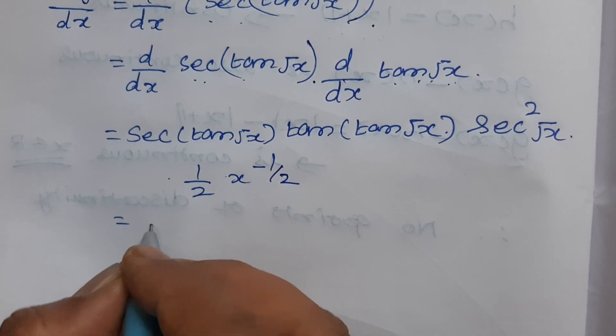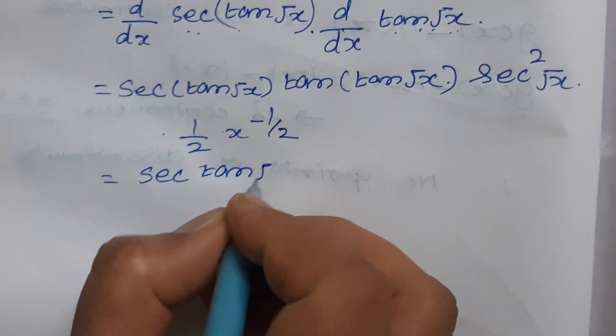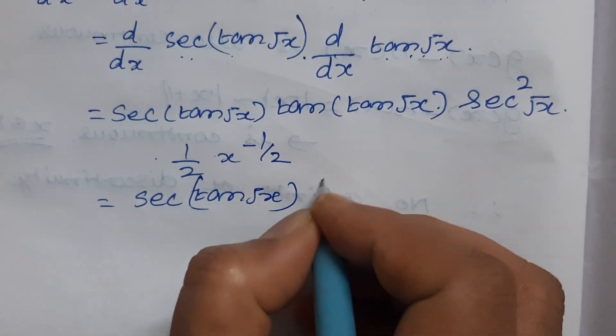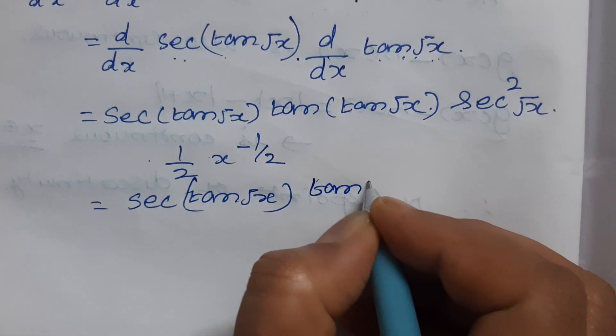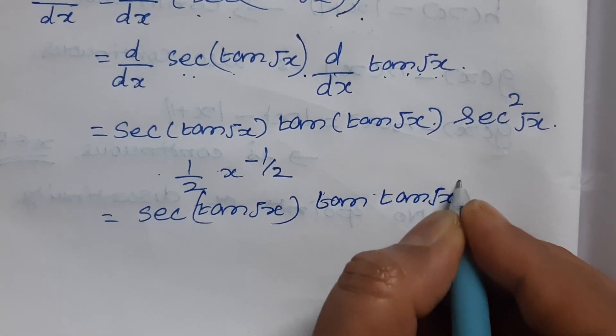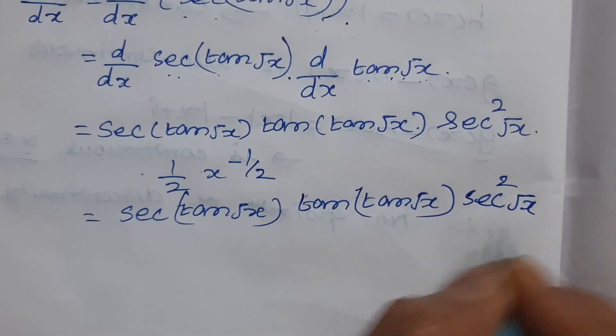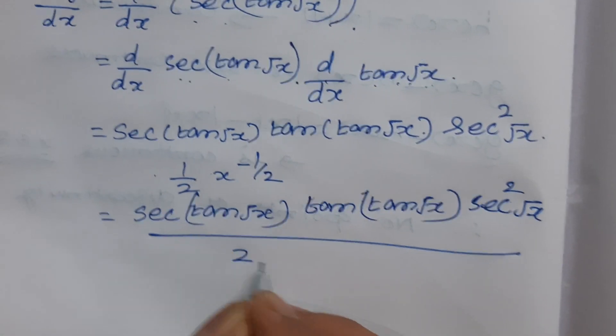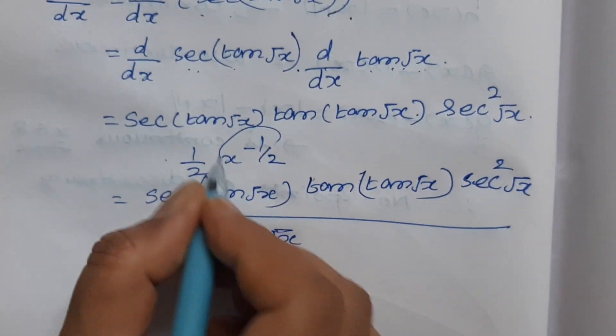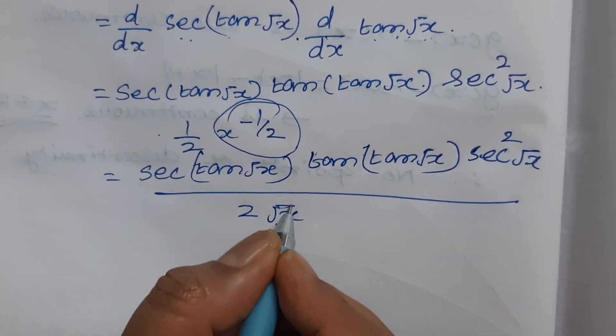Sec²(√x) divided by 2√x. This is x^(-1/2). I write it in the denominator, that is √x.